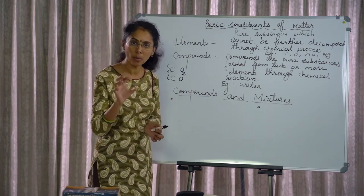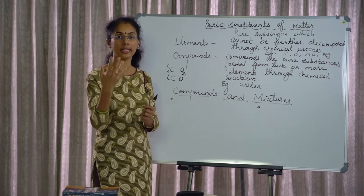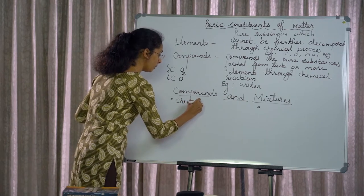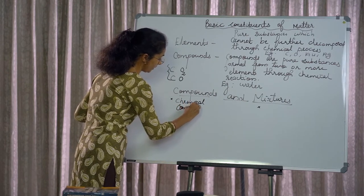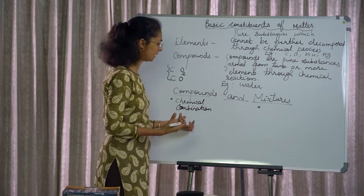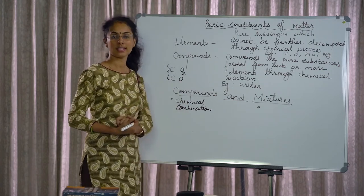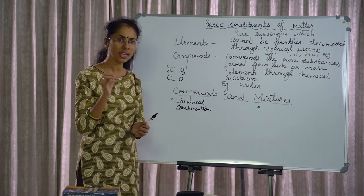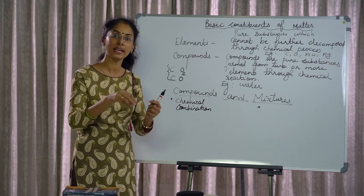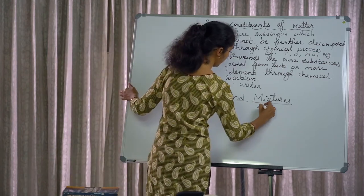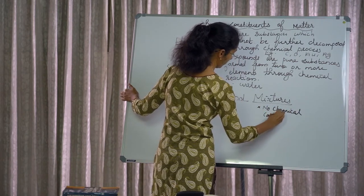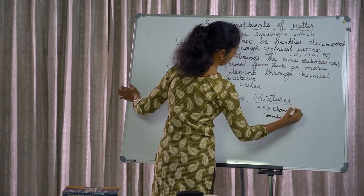The next point concerns chemical combination. In a compound, elements are joined by chemical combination. In contrast, a mixture is not formed by chemical combination. For example, if you mix chips and nuts together, you just need a mixer — that is a mixture, not a chemical combination.